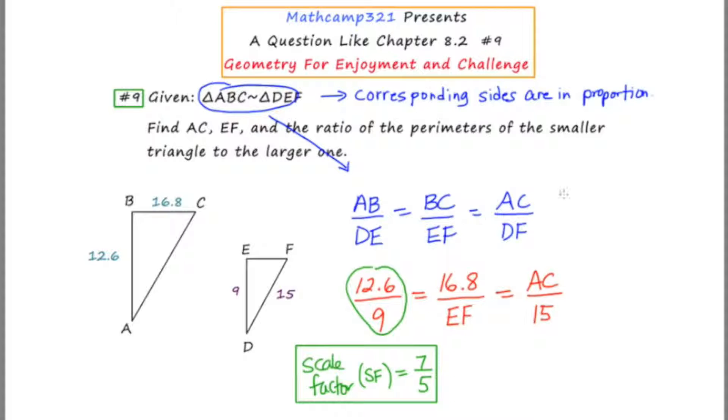So I'm going to go up here where there's a little bit more space, and I'm going to say 16.8 is to EF as 7 is to 5. And I'm going to cross multiply, and I'm going to get 7EF is equal to 5 times 16.8. And again, I'm using my calculator. 16.8 times 5 is 84. And if I divide 84 by 7, I get 12. And that tells us that EF is equal to 12. And that was one of the things I was supposed to find.